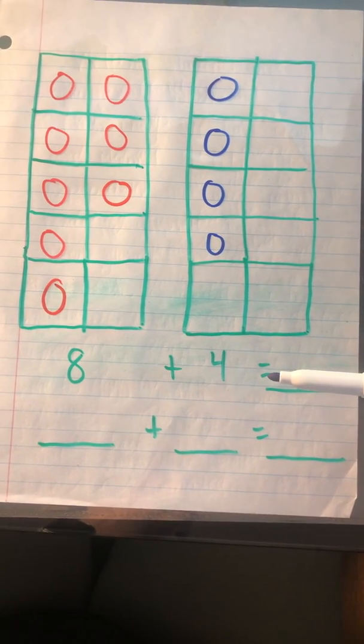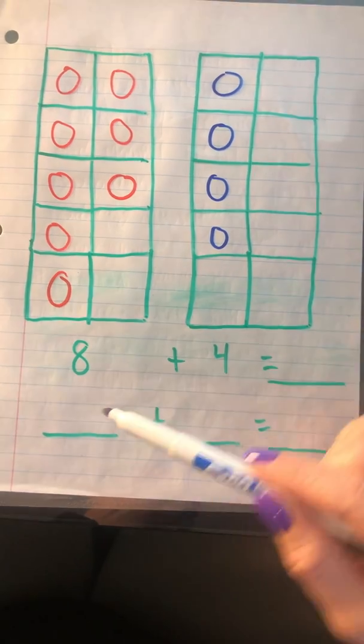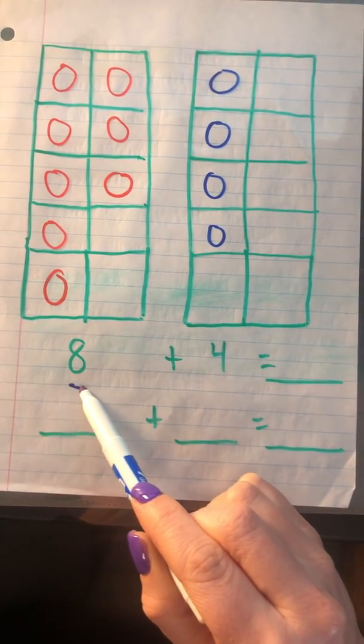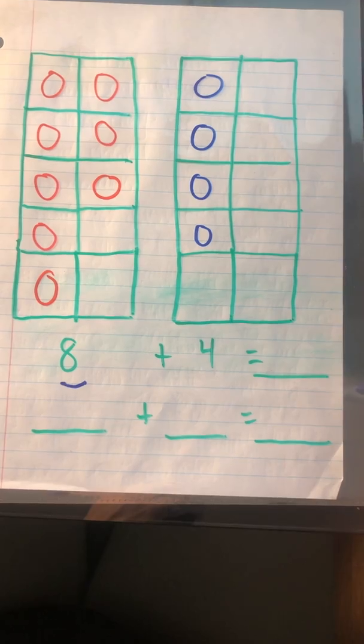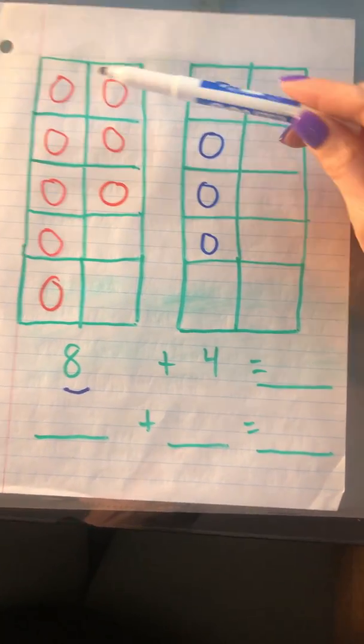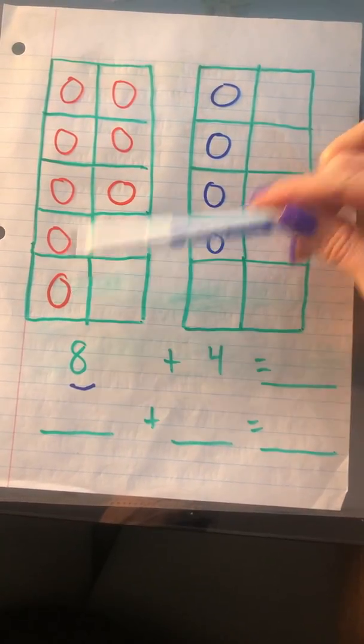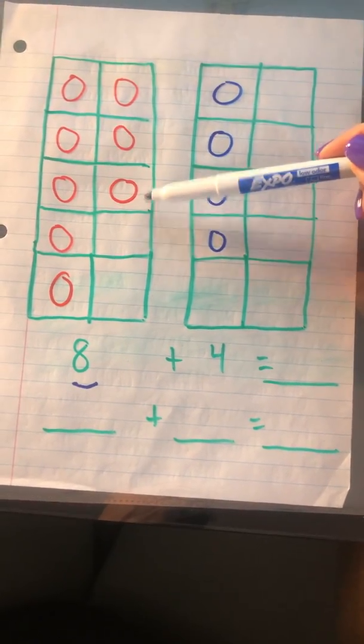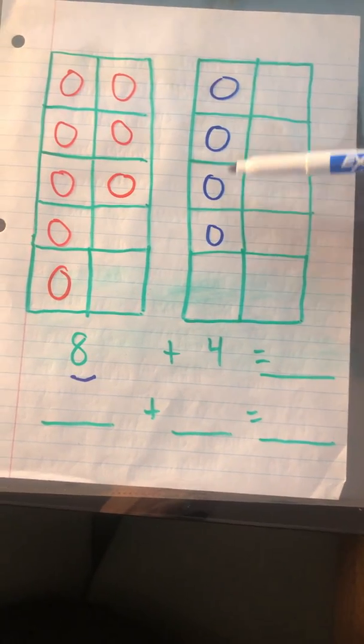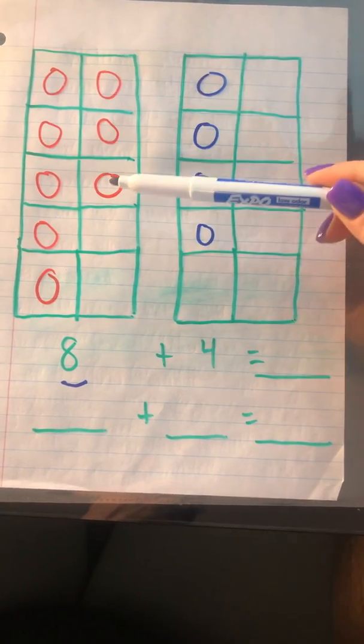I have my problem here: 8 plus 4. Remember, we said we can use this strategy when one of the numbers is a 9, 8, or 7. So one of the numbers here is an 8, so then I can use this strategy to help make a 10. I want to make a friendly 10, so I added 8 counters here: 1, 2, 3, 4, 5, 6, 7, 8, plus 4: 1, 2, 3, 4.